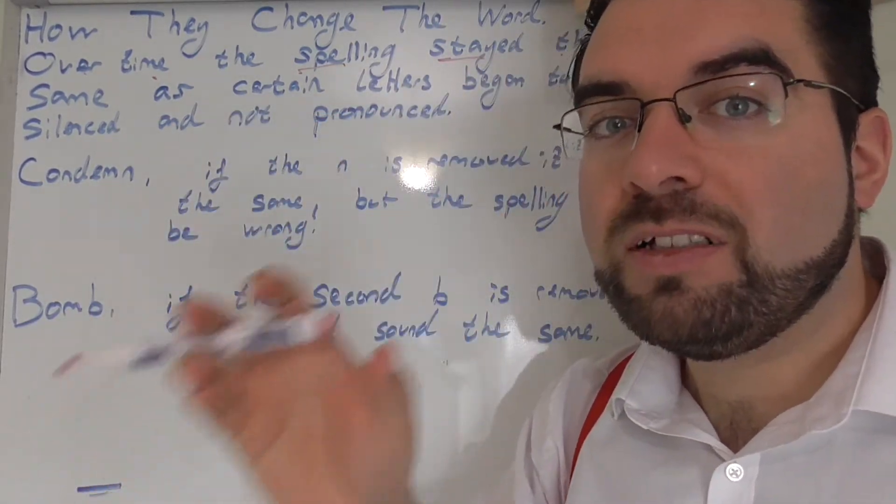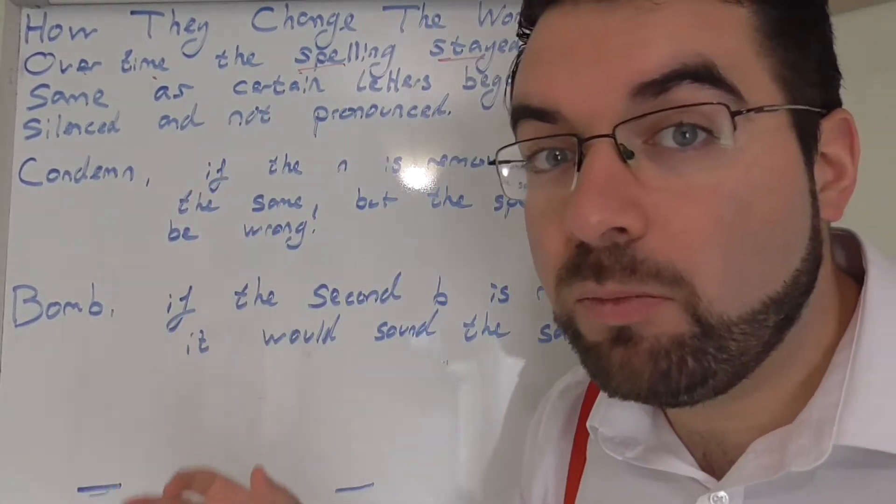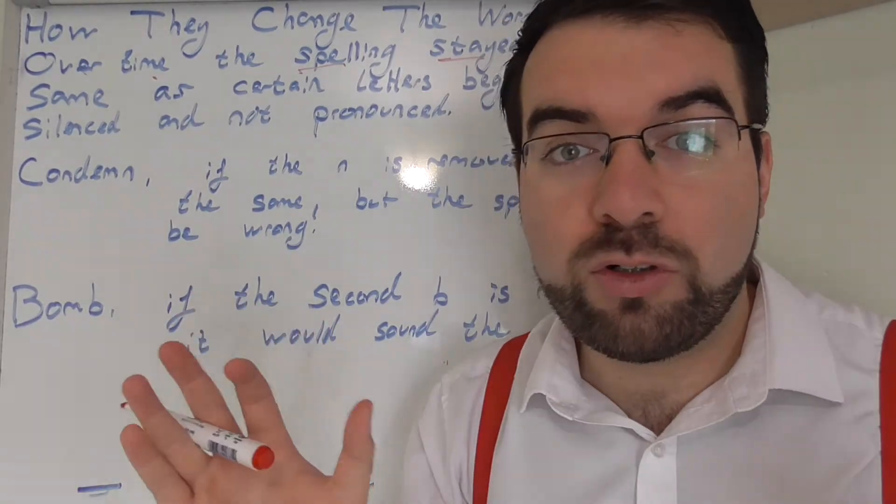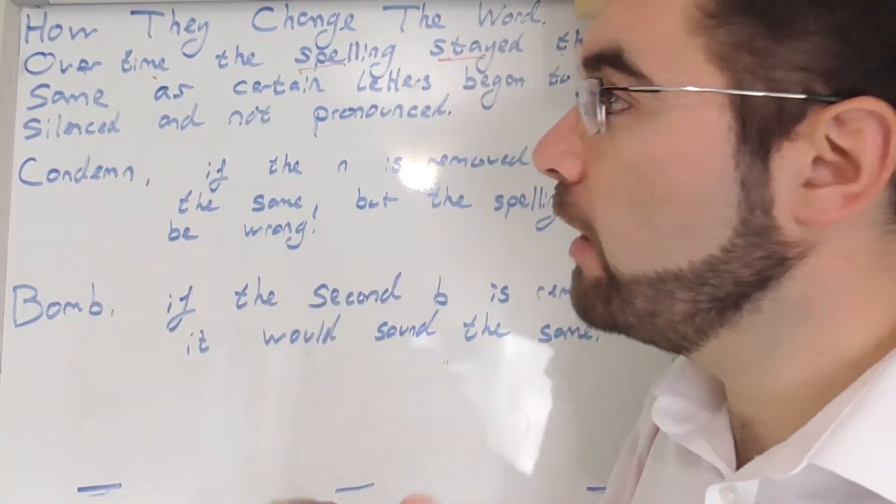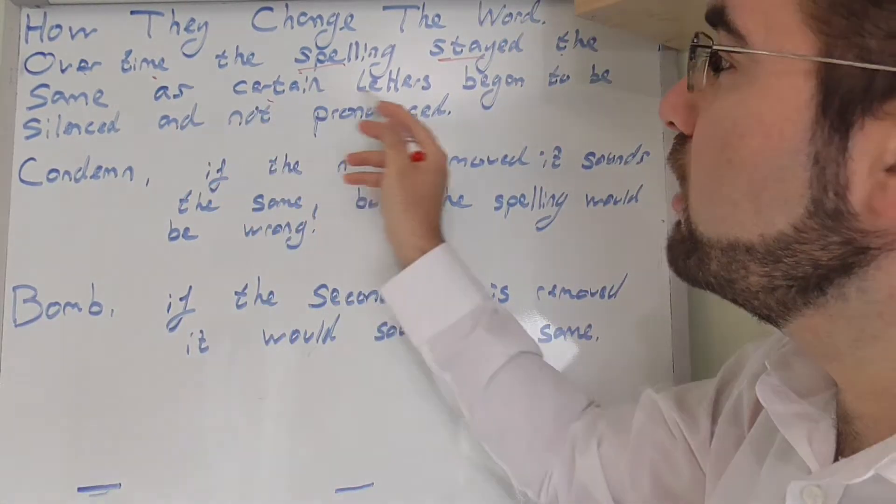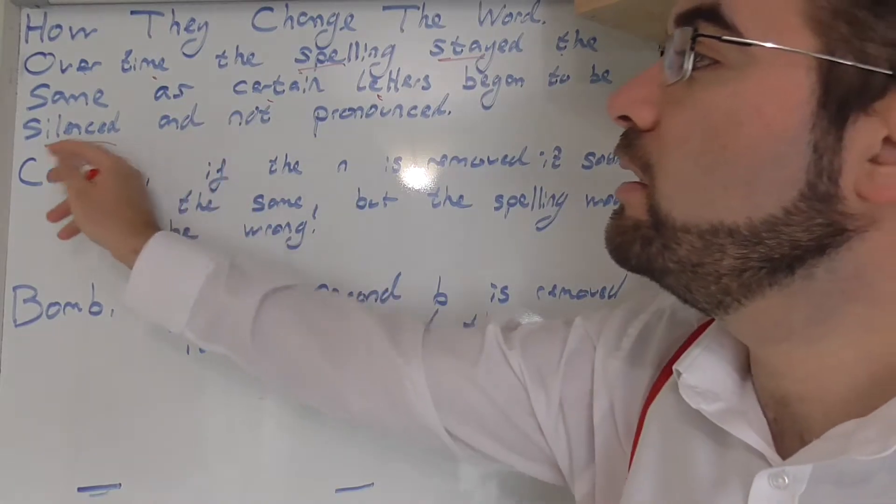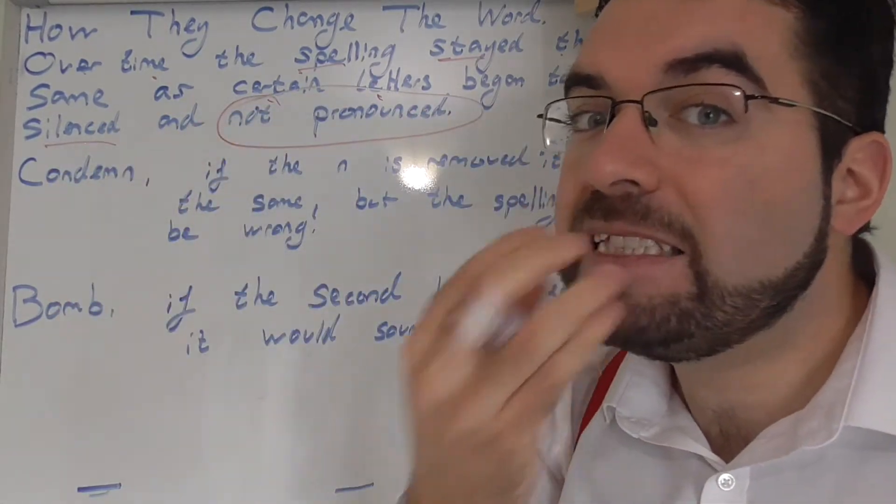How a word is spelled stays the same over time. That could be hundreds of years, 400 years or 100 years. It could be anything. So, the spelling stayed the same as certain letters began to be silenced and not pronounced, not said.